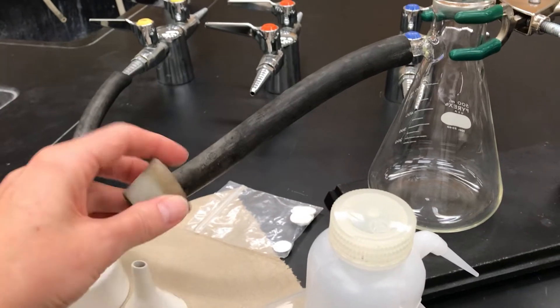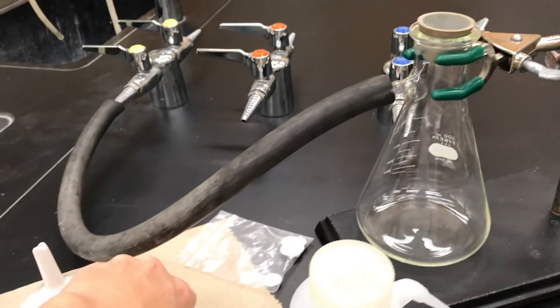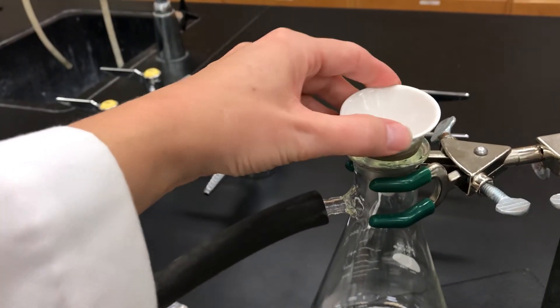We'll connect that with a little rubber adapter, and then after the rubber adapter you put in the Hirsch funnel, and those will create a nice seal.